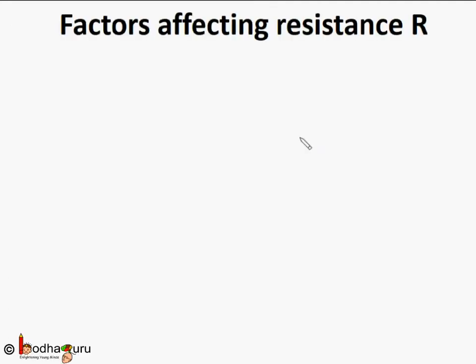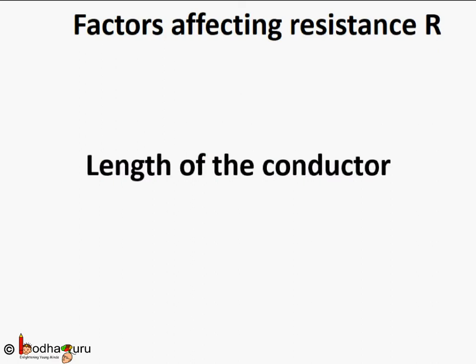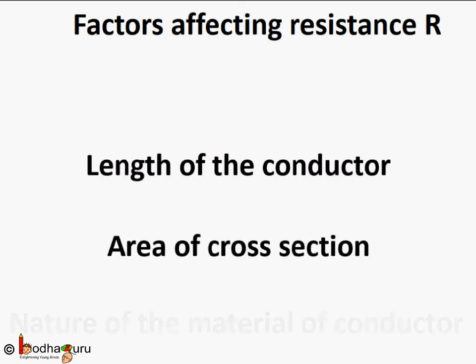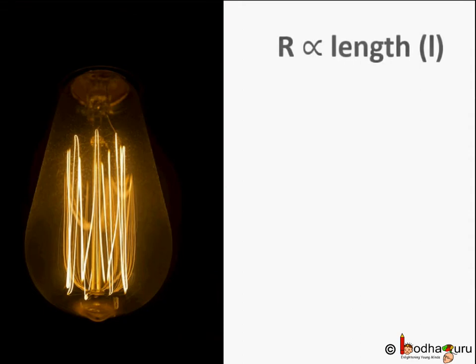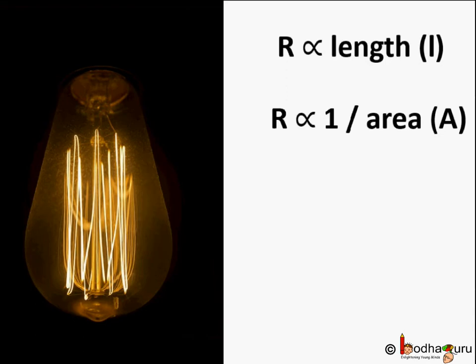There are some factors affecting the resistance of a conductor. The resistance of a conductor depends upon its length, the area of its cross section, and the nature of its material. Resistance of a uniform metallic conductor is directly proportional to its length and inversely proportional to the area of its cross section.